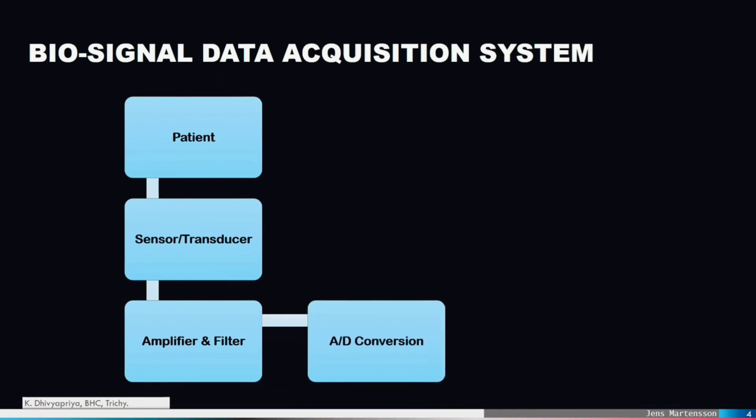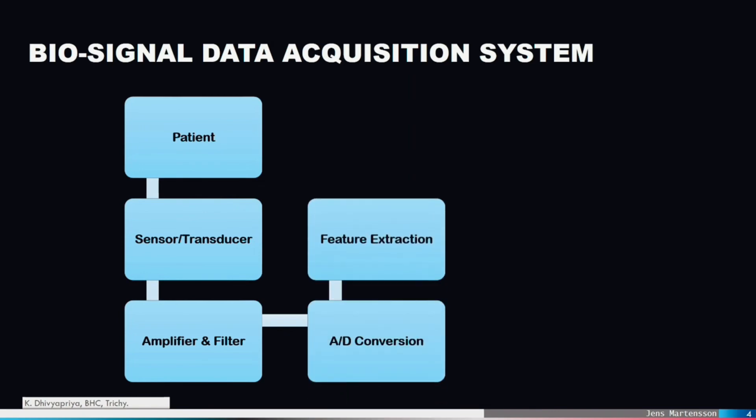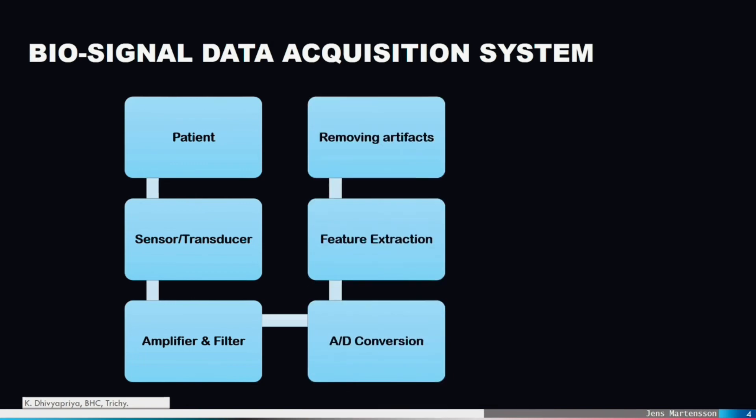Since most signal processing is easier to implement using digital methods, the analog signal is converted to digital format using analog to digital converter. Once converted, the signal is often stored or buffered in the memory. From this step, the digital signal processing starts.